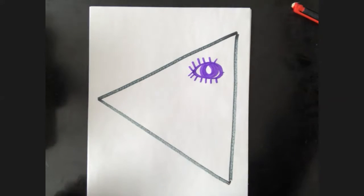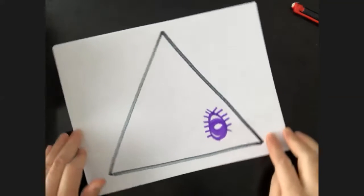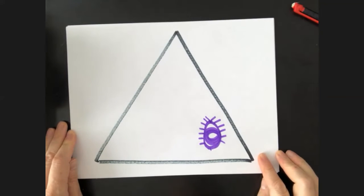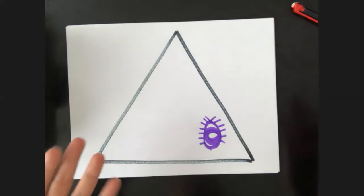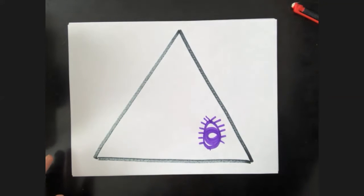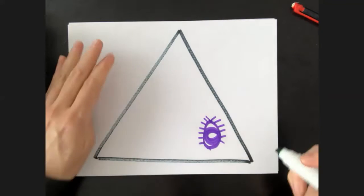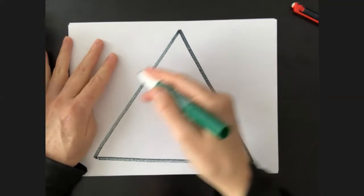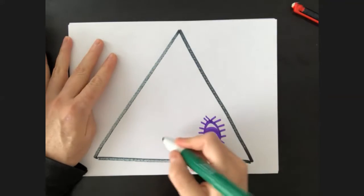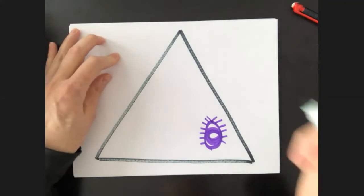Now, the next thing you need to do, we're going to turn the paper. Now, that may not be the same direction, it doesn't really matter, so just turn it. So now I'm going to get a different color. Now, anywhere around this triangle, so it can be on the triangle, it can be in the triangle, draw a mouth.